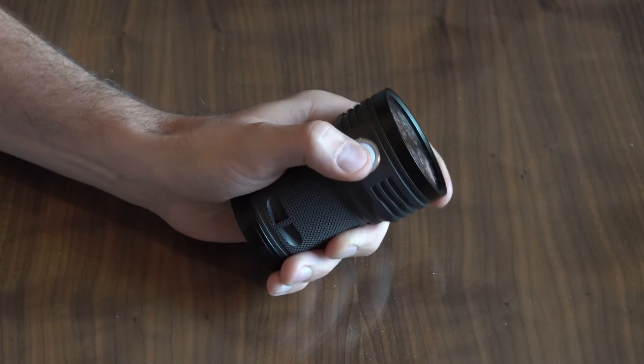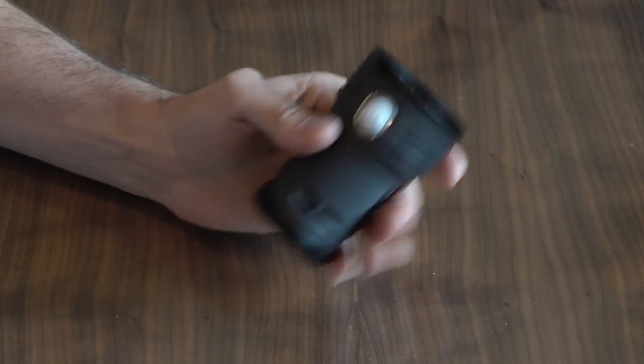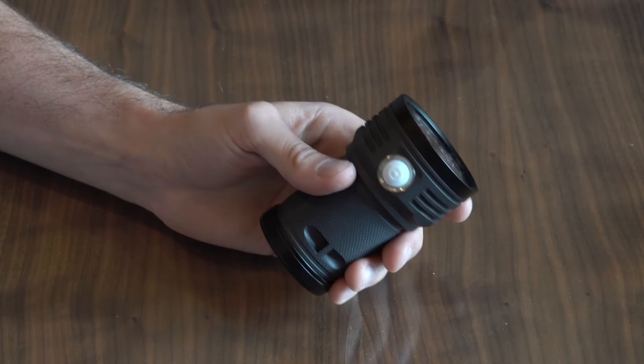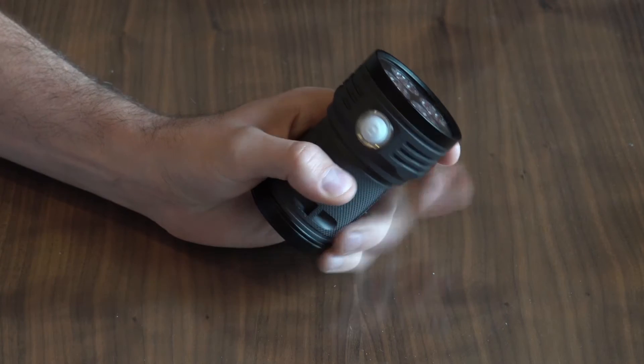So we're going to enter into that user interface right now. One, two, three, four, five, six, seven, eight, nine and hold. So now we are in the Minimalist user interface. Now from off in this user interface there are three main functions.